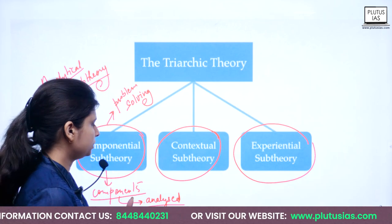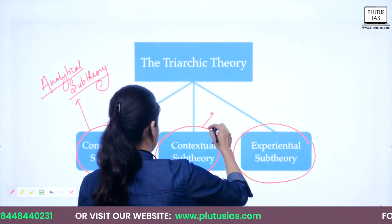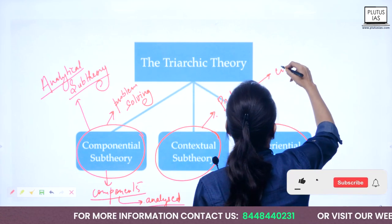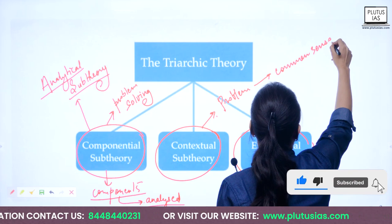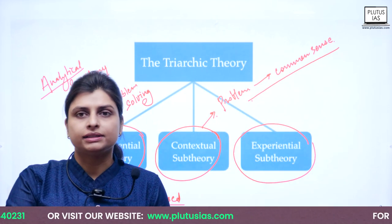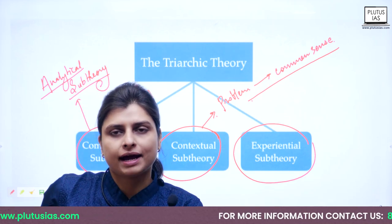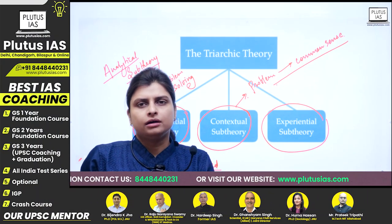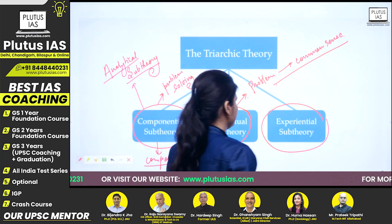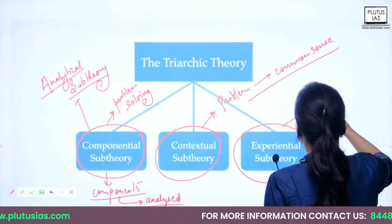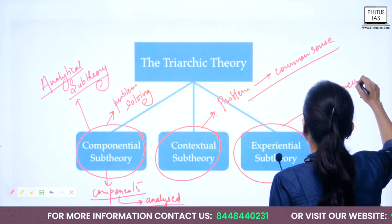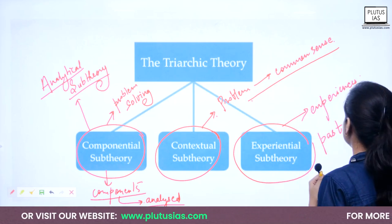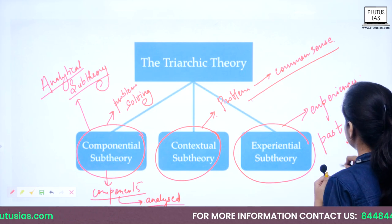The contextual sub-theory is confined to solving problems based on common sense — that is, your smartness. The experiential sub-theory talks about problem solving based on your past experiences or past incidents from which you have gained prior knowledge.